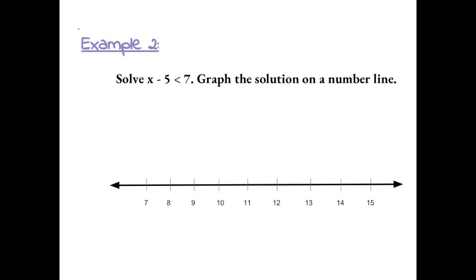Example 2: solve x minus 5 is less than 7, and graph the solution on a number line. I'm going to do the inverse of subtracting 5 and add 5 to both sides. This equals 0 and cancels out. We're left with x; bring down the same symbol: x is less than 12.